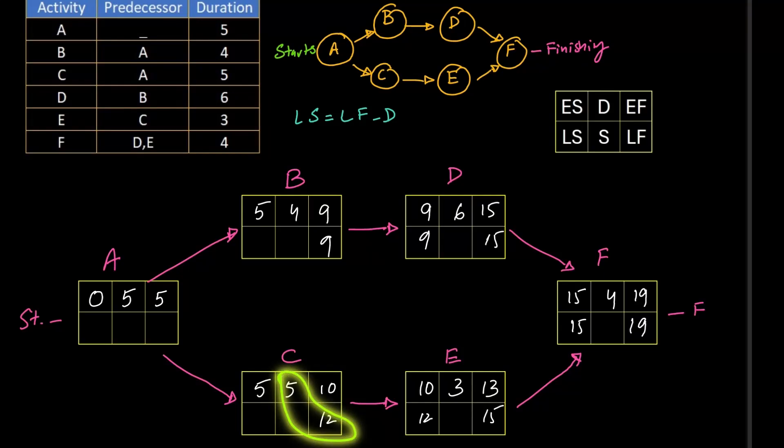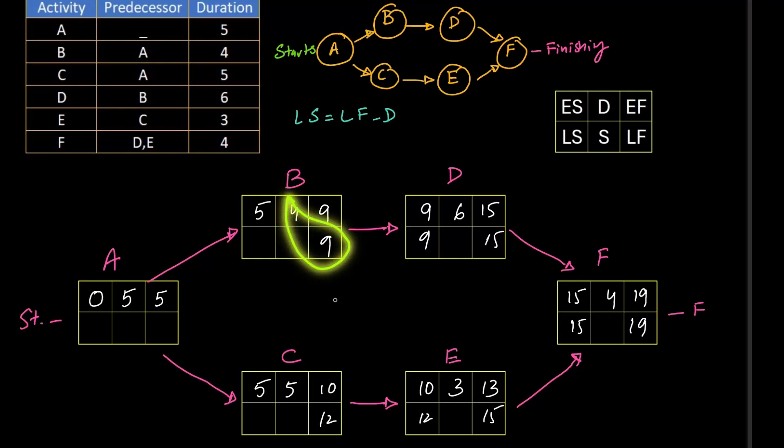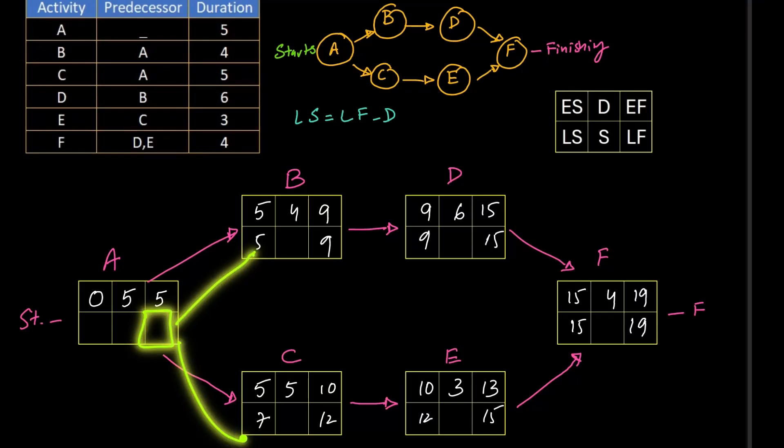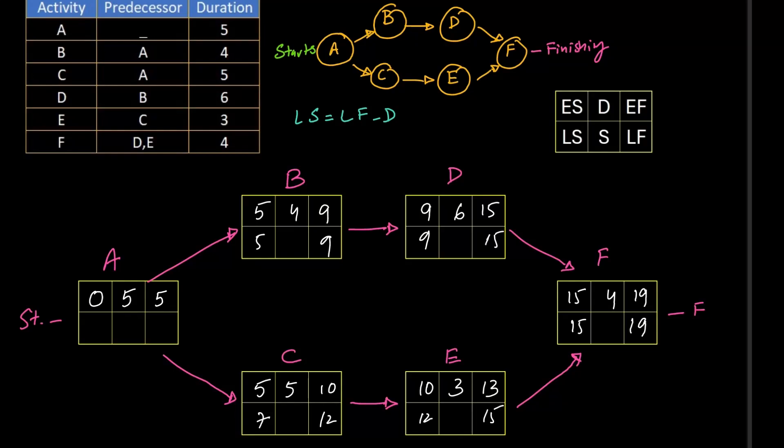12 minus 5 equals 7. 9 minus 4 equals 5. In this box there are two options, 5 and 7. When we are going backward in the activities, we need to write the smaller number. Here 5 is smaller than 7, so we will write 5. And again 5 minus 5 equals 0.